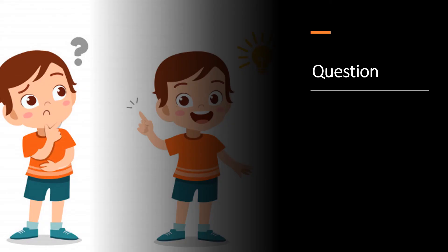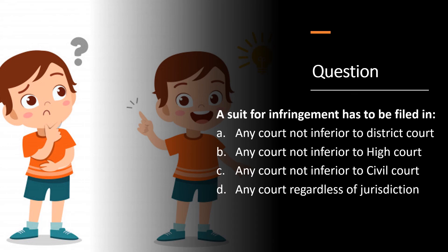Now it's time for the question of the day. A suit for infringement has to be filed in: option 1 — any court not inferior to a district court; option 2 — any court not inferior to a High Court; option 3 — any court not inferior to a civil court; option 4 — any court regardless of jurisdiction. You can type and put your answers in the comment section below.